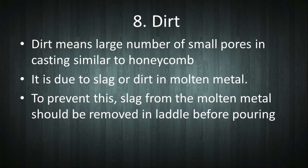The next defect is dirt, also called sponginess. It is a large number of small pores in the casting, similar to a honeycomb structure. It occurs due to slag or dirt in molten metal. To prevent this, the slag in the molten metal should be removed before pouring.